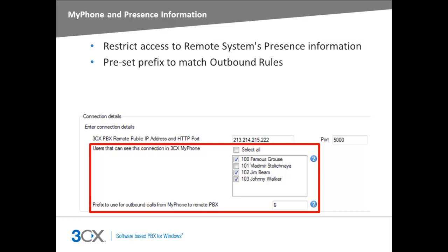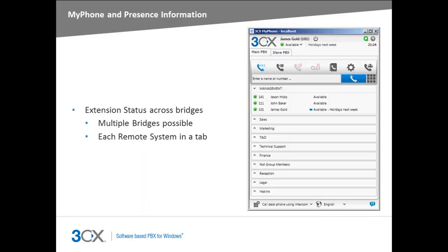If your outbound rules require you to dial a prefix to contact extensions on the remote system, you can also configure this to allow users to easily make calls to these extensions using MyFall. When both options are enabled, 3CX MyFall will display a new tab as shown here. Simply click the tab to view MyFall extension status information regarding the remote end of the bridge.